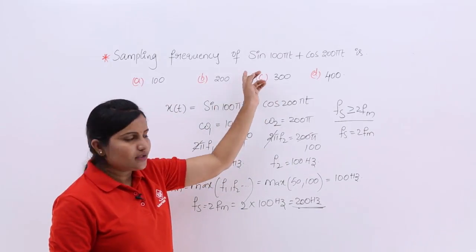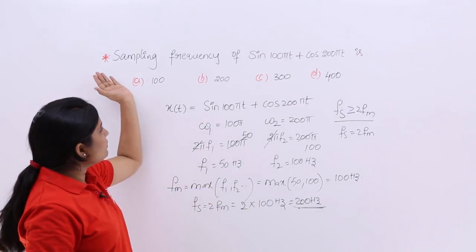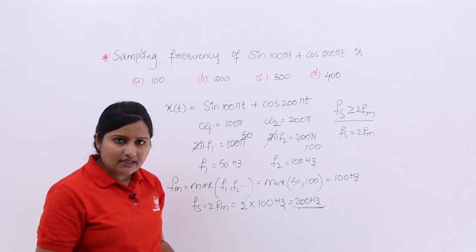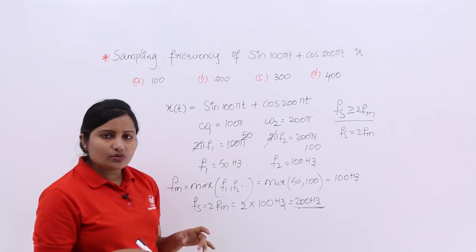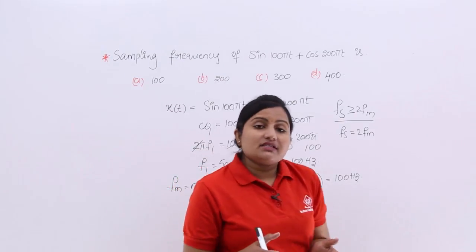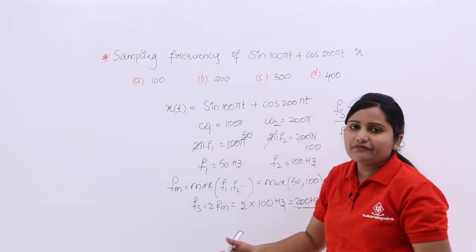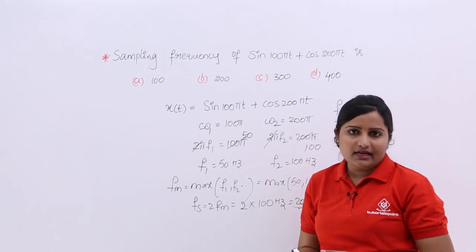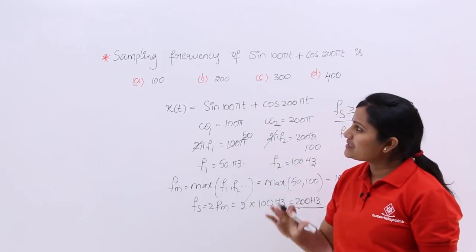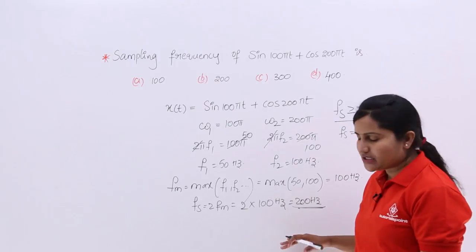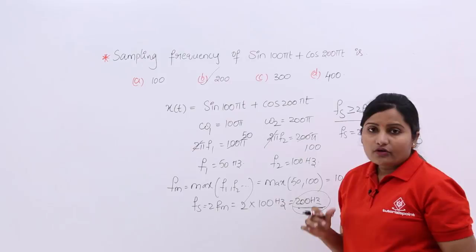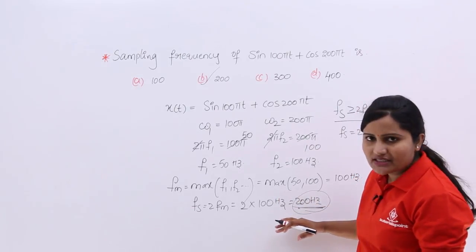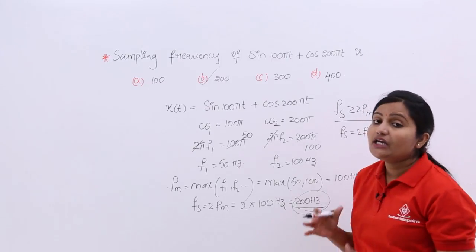You can see that in the options they have given 200, 300, 400, and so on. Whenever they ask just 'what is the sampling frequency,' you can take 300 also, or 400 also. But when this type of problem is given in technical exams, you need to consider the Nyquist frequency. The Nyquist rate of 200 Hz is what you need to consider to sample this message signal without any distortion — that sampling frequency must be at least 200 Hz.